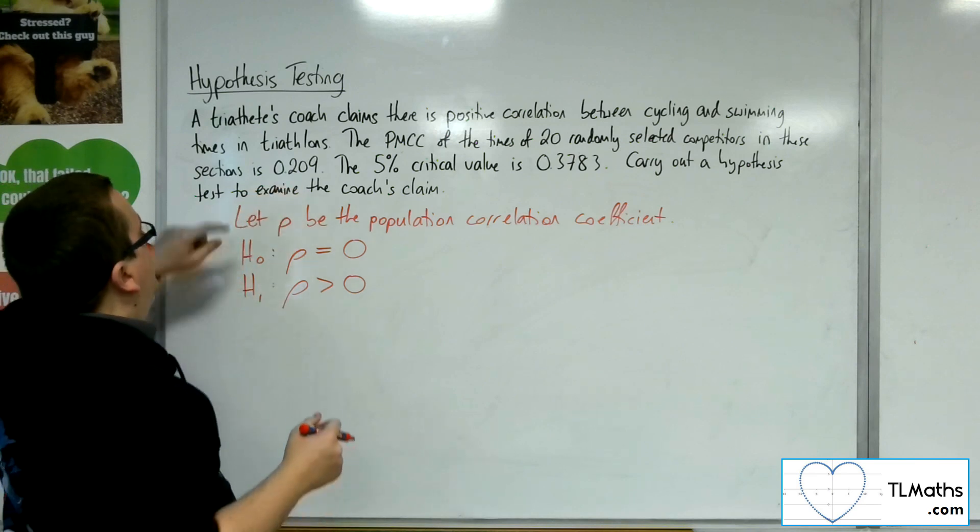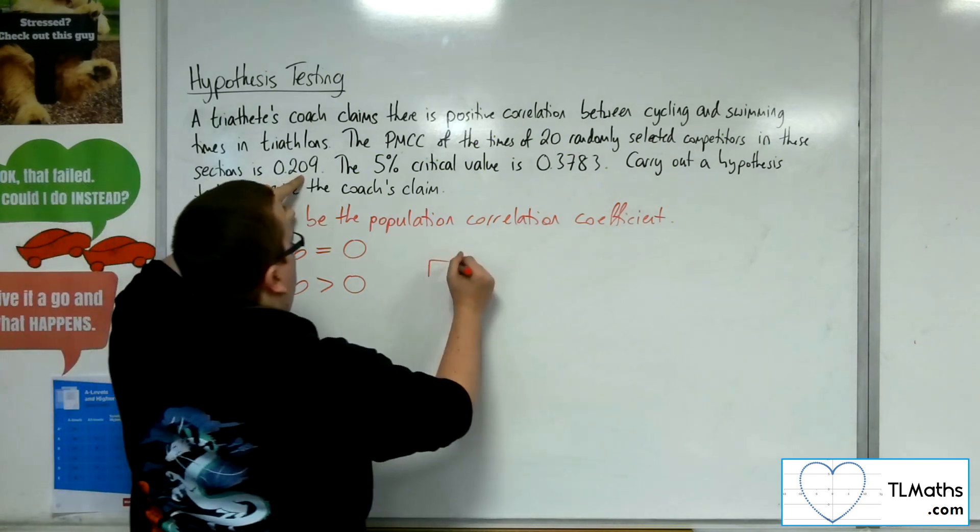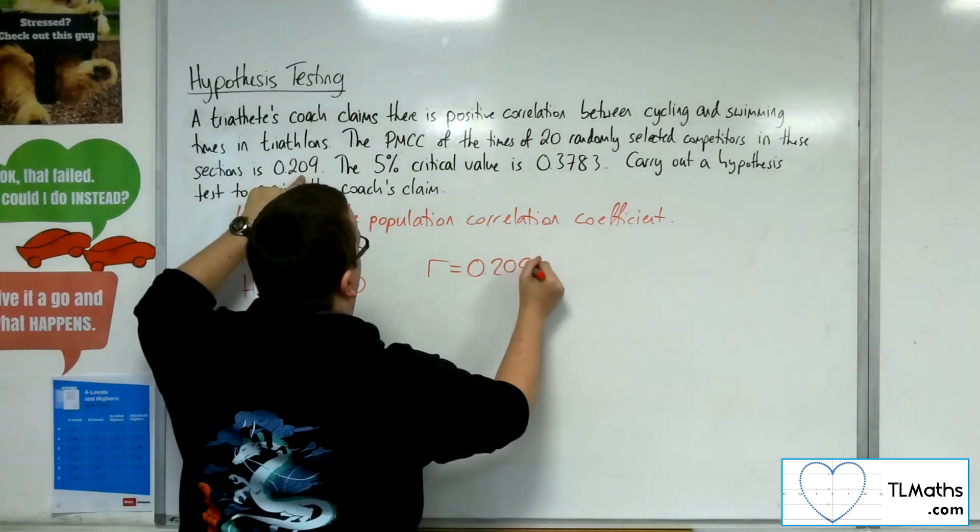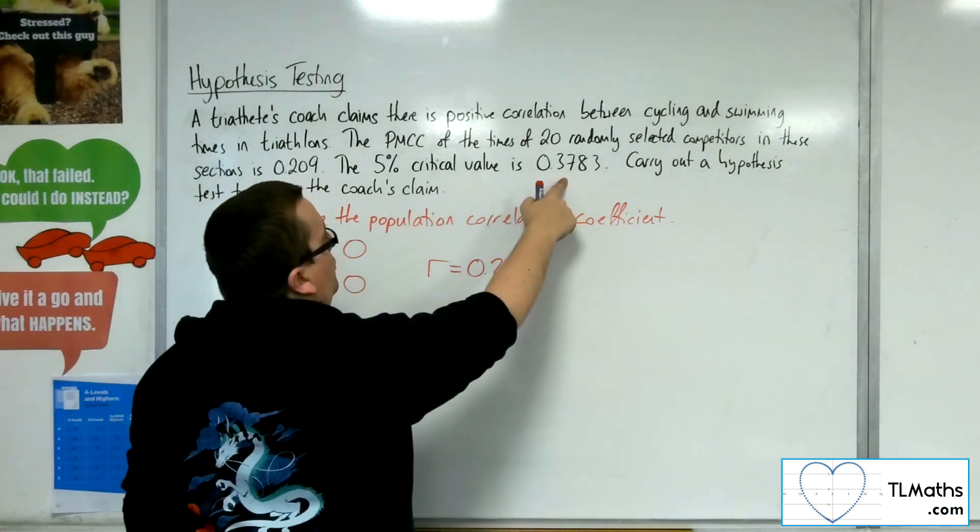We have been given that the value of r is 0.209, and the critical value is 0.3783.